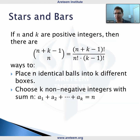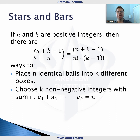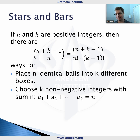Let's see this as a formula. If n and k are positive integers, then there are n plus k minus 1 choose n in terms of a binomial coefficient. This is the same as n plus k minus 1 factorial divided by n factorial times k minus 1 factorial. This answers many questions: it's the number of ways to place n identical balls into k different boxes, or the number of ways to choose k non-negative integers where a1 plus a2 all the way up to ak equals n.